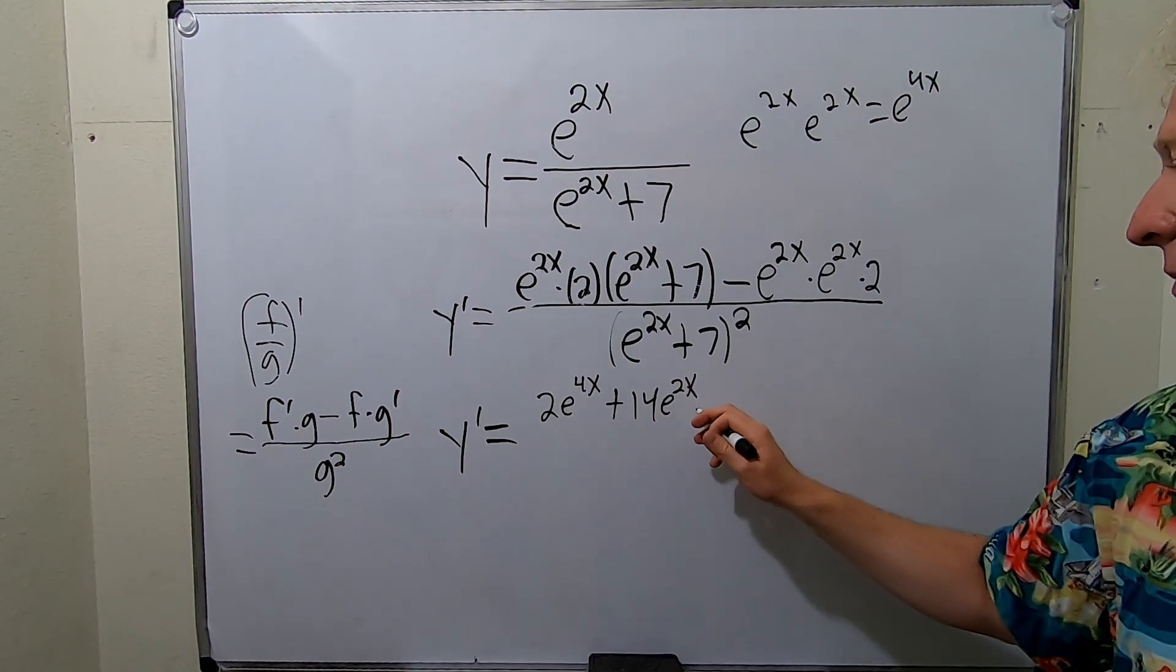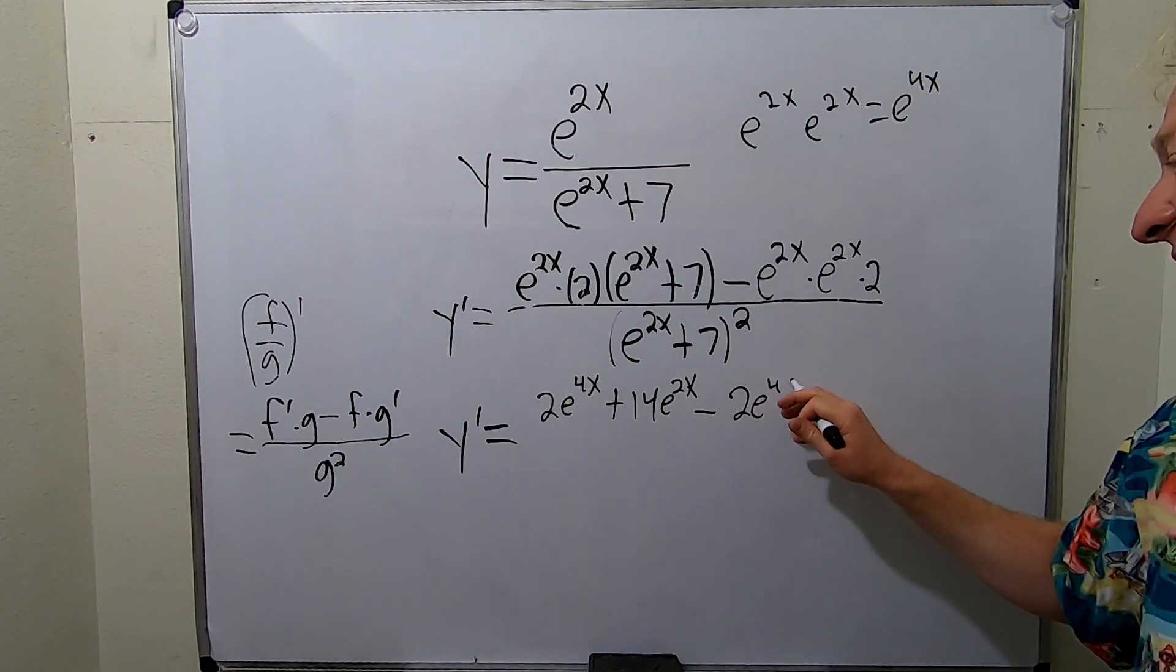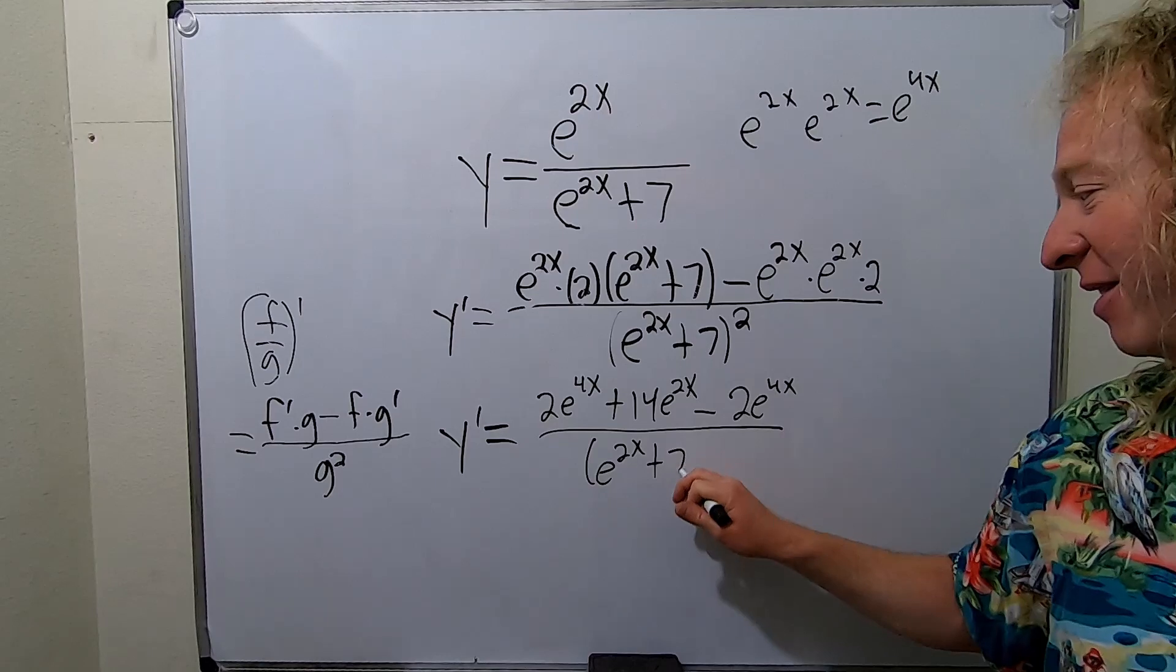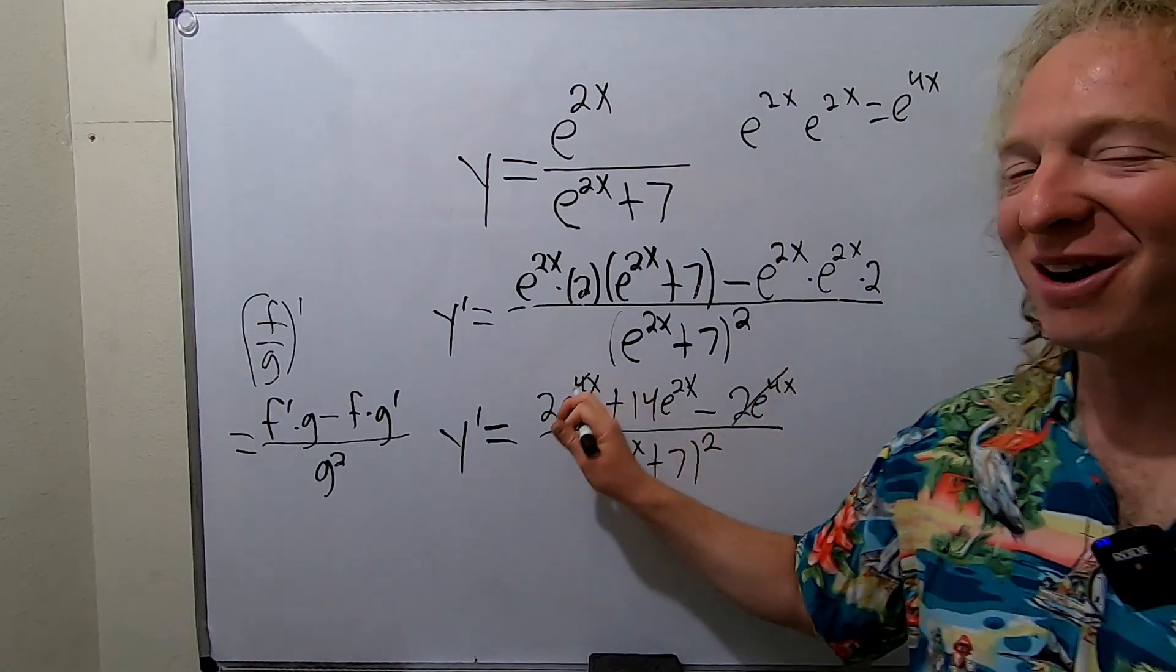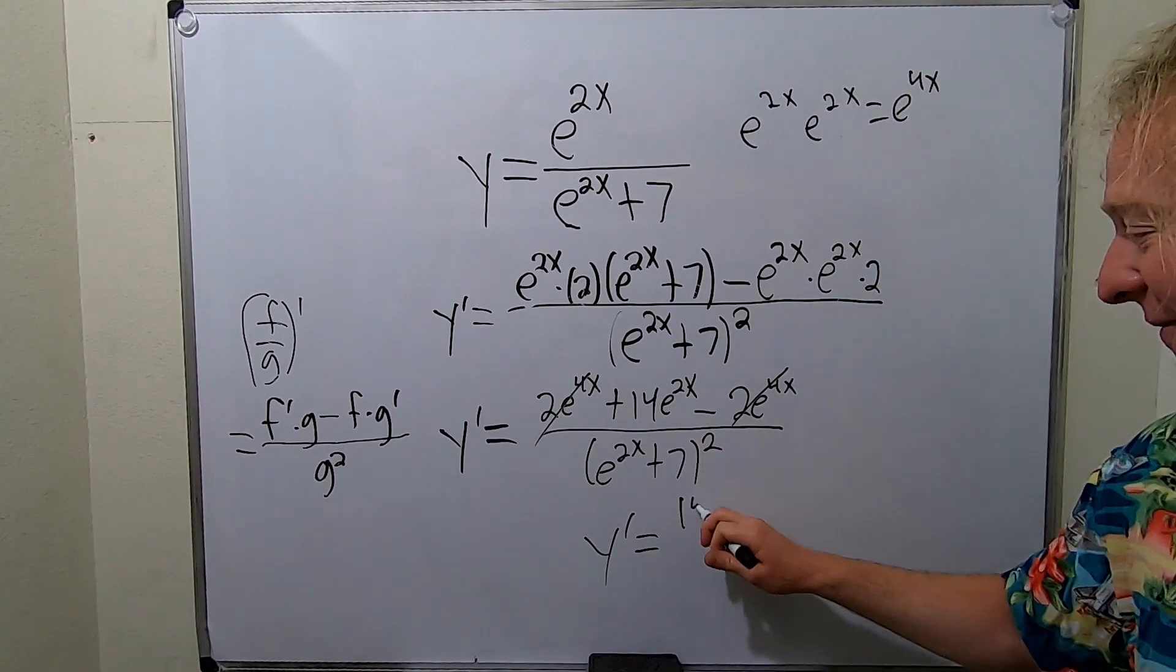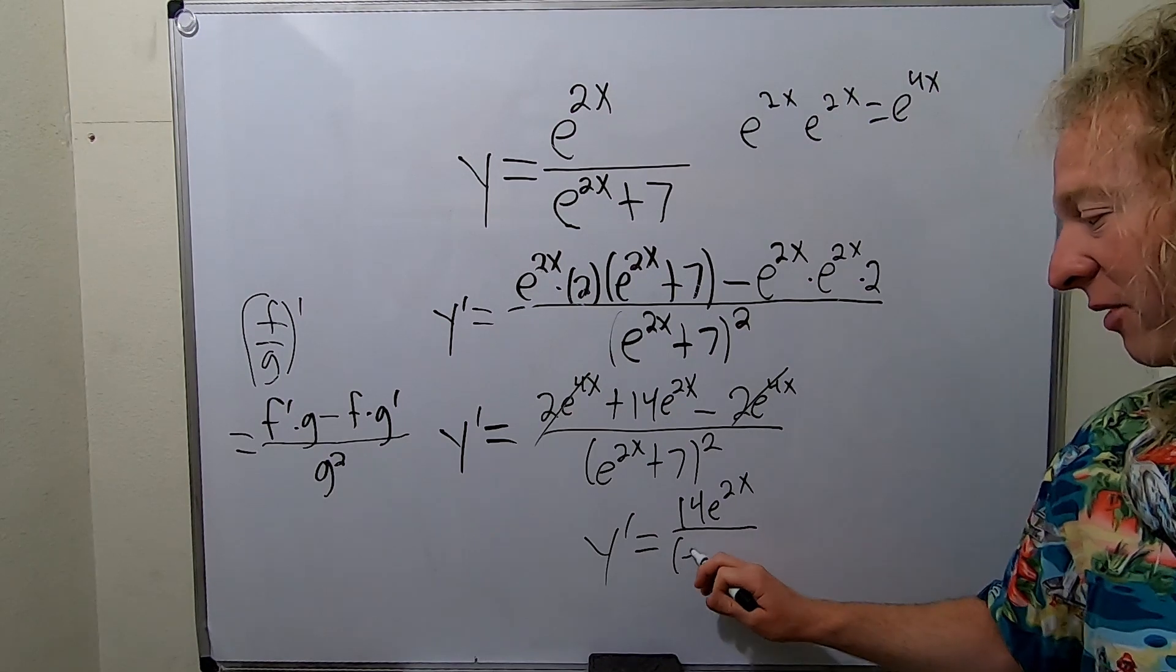Minus 2e to the 4x. Yeah, things just work out sometimes for the better, because these go away. Very, very good. It's a good feeling. So this is 14e to the 2x all over the bottom piece squared, e to the 2x plus 7 squared.